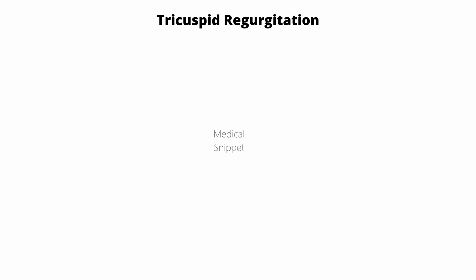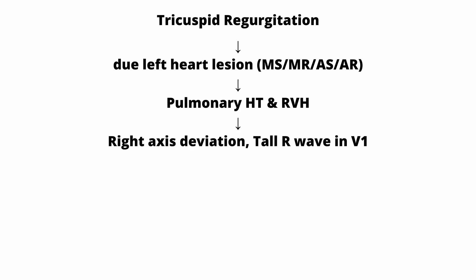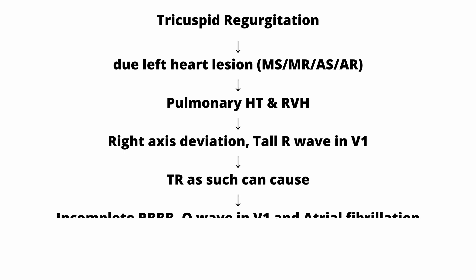ECG in tricuspid regurgitation: Tricuspid regurgitation is usually due to left heart lesions causing pulmonary hypertension, as discussed earlier. So in these patients, the ECG changes are due to right ventricular hypertrophy, causing right axis deviation and tall R wave in V1 that is more than 7 mm tall. Tricuspid regurgitation as such can also cause incomplete right bundle branch block, Q waves in V1, and atrial fibrillation.